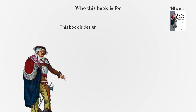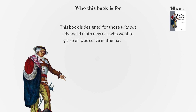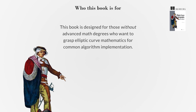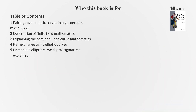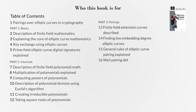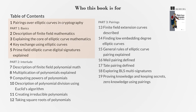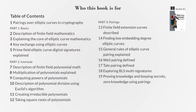This book is designed for those without advanced math degrees who want to grasp elliptic curve mathematics for common algorithm implementation. It assumes some familiarity with equations involving multiple variables and teaches the basics of elliptic curves over finite fields for cryptography. Additionally, it covers elliptic curve pairing mathematics. Upon completion, you'll be capable of creating secure key transfers and digital signatures for blockchain systems, ensuring a strong understanding of cryptographic foundations.